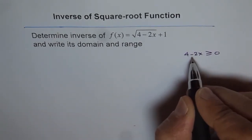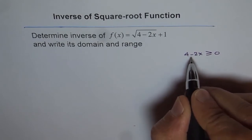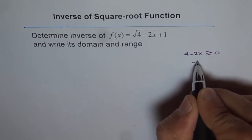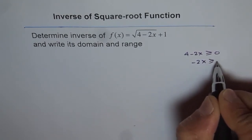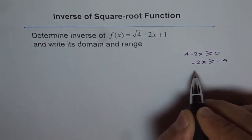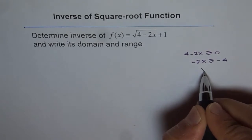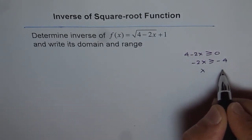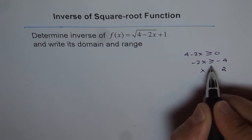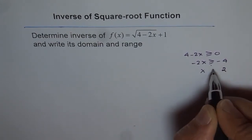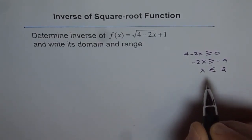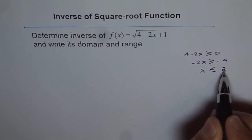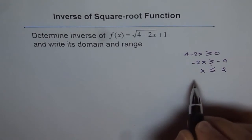We'll keep minus 2x here and take 4 to the other side. So we have minus 2x should be greater than or equal to minus 4. Now we divide by minus 2. When you divide by minus 2, this becomes minus 4 divided by minus 2, which is 2. The inequality sign changes, so x is less than or equal to 2. That is the domain.